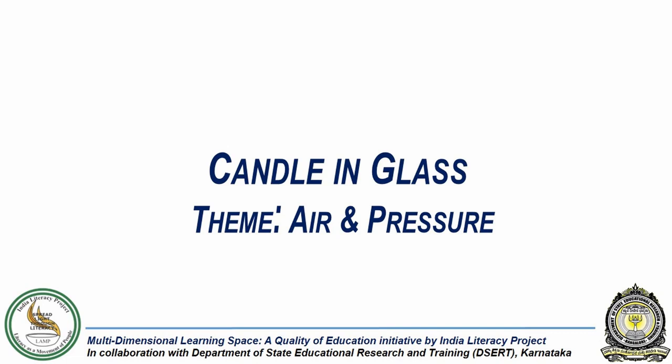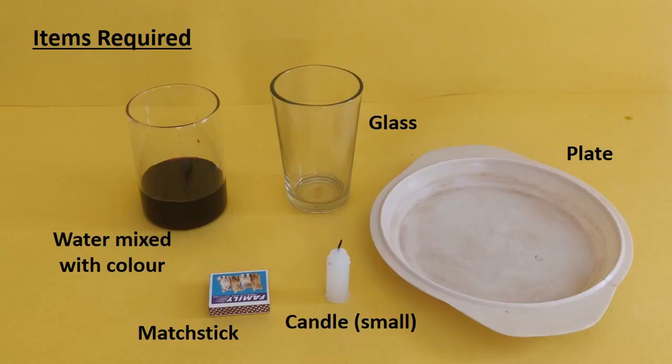In this experiment, we will explore if air is required for combustion. For this experiment, we require a glass, a candle that is shorter than the glass, a match box, a plate and some water mixed with colour like either potassium permanganate, ink, or food colour.